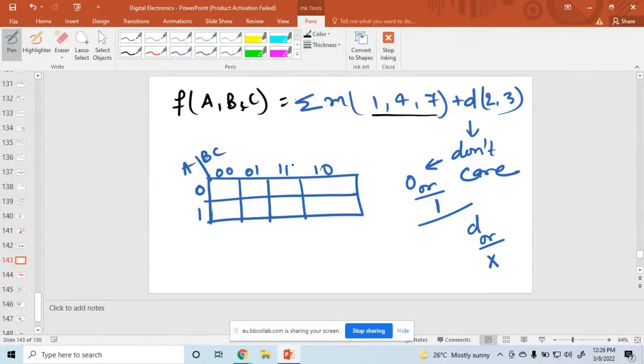Where is the minterm? Minterm is 1, 4, and 7. And where is the don't care? 2 and 3 is the don't care. So this is the don't care and this one is a don't care.